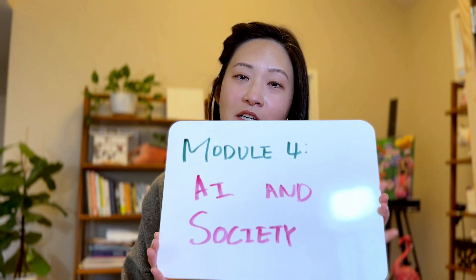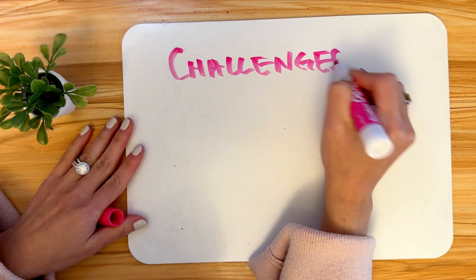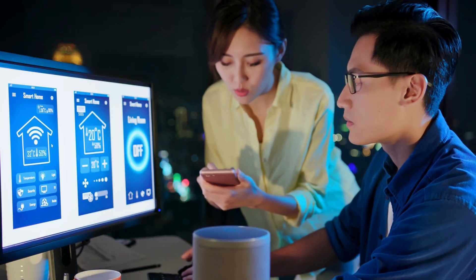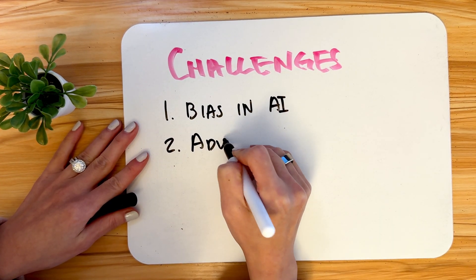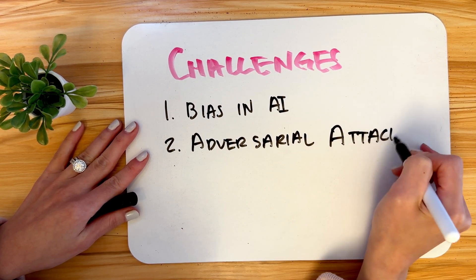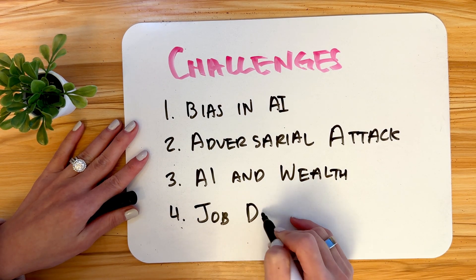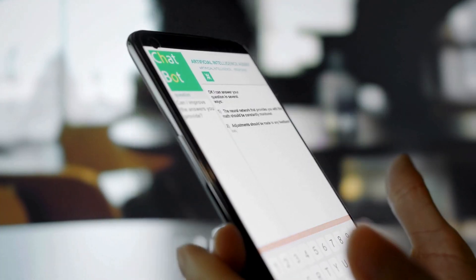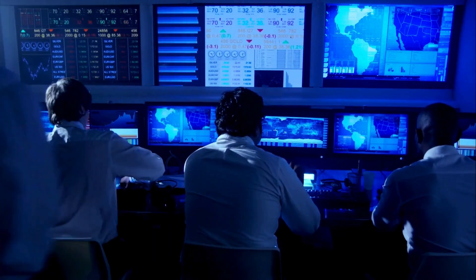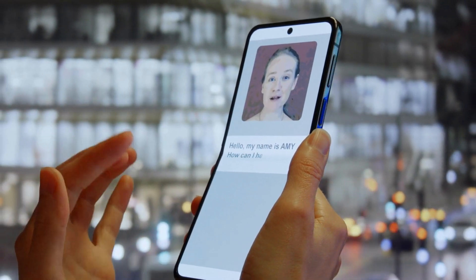Finally, in module four — AI and society — let's talk about the societal impact of AI. There are exciting opportunities, but also challenges. First, bias in AI: AI can make biased decisions if its training data is flawed, so diverse teams and fair data practices are important. Second, adversarial attacks try to trick AI into doing something it wasn't meant to do, so strong security is necessary. Third, developing countries can use AI to grow industries and boost their economy, creating equal opportunities. Lastly, AI-driven automation could replace many jobs but will also create new ones — so people need to keep learning, governments should support policies, and businesses need to help workers gain new skills.